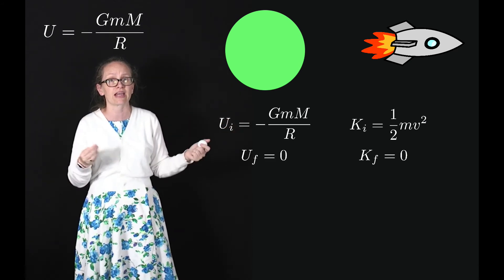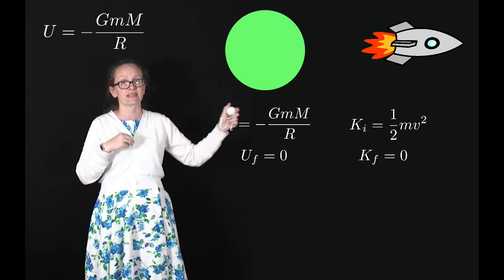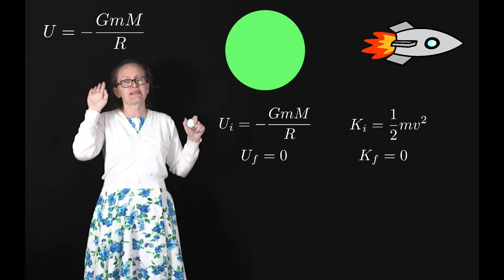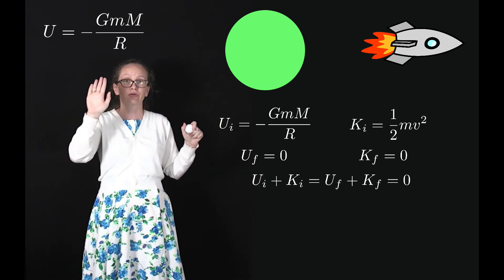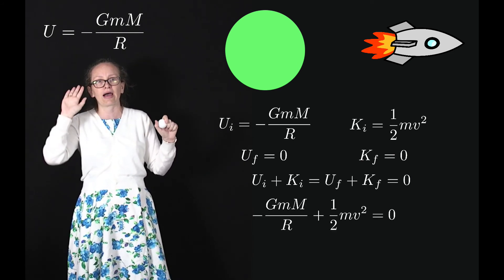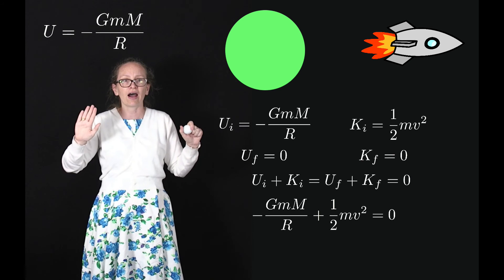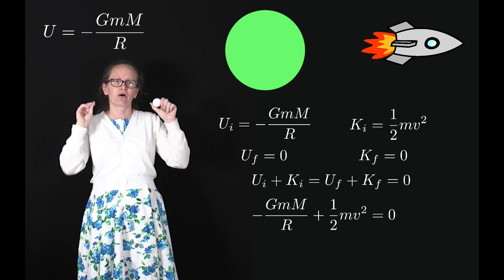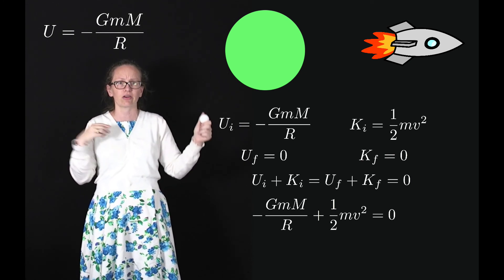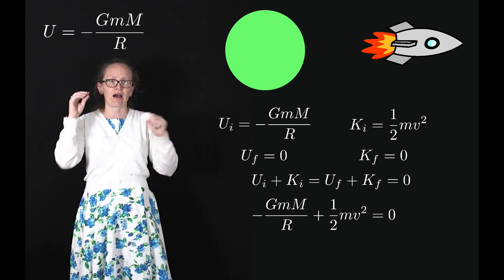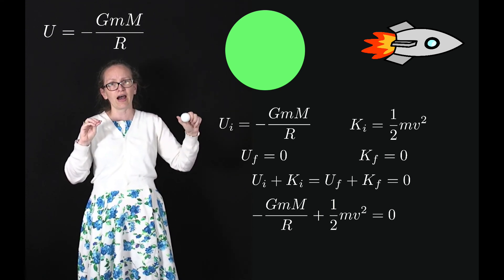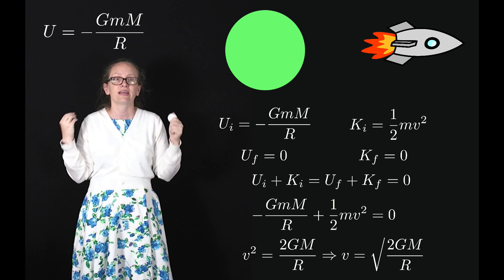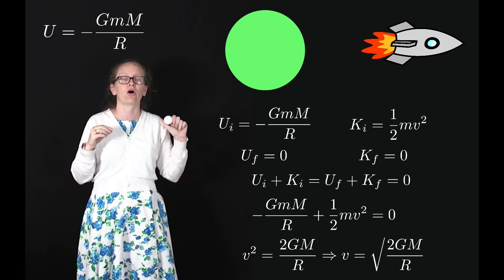At infinite distance the gravitational potential energy is also zero, so the final potential and kinetic energies are both zero. Setting initial potential plus initial kinetic energy equal to zero gives minus GMm over r plus one-half mv squared equals zero. This simplifies to one-half v squared equals GM over r, so v squared equals 2GM over r, giving the escape velocity as the square root of 2GM over r.